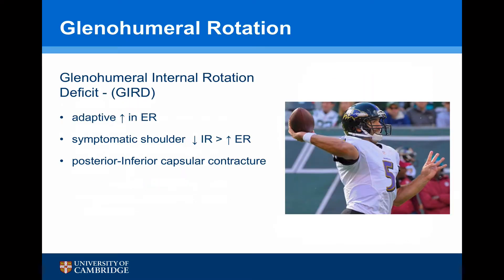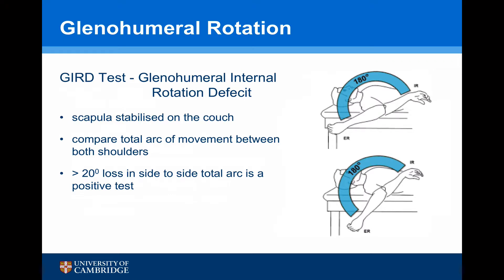GIRD — glenohumeral internal rotation deficit — is important to assess. In a throwing shoulder, there is often an adaptive increase in external rotation. In a symptomatic shoulder, the relative decrease in internal rotation may be greater than the increase in external rotation, which may indicate a posterior inferior capsular contracture. The GIRD test involves stabilising the patient's scapula on the couch and comparing the total arc of movement between both shoulders. A loss of more than 20 degrees side-to-side in the total arc gives a positive test.